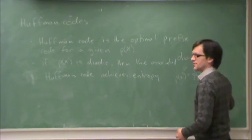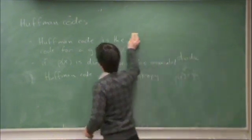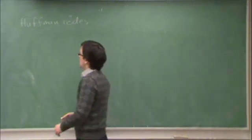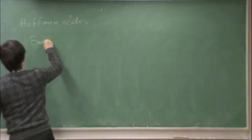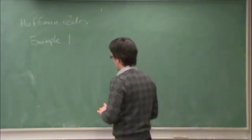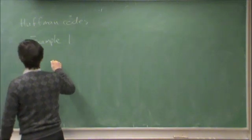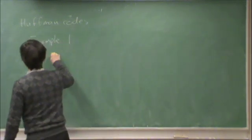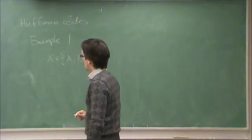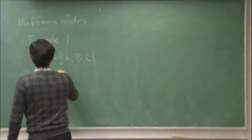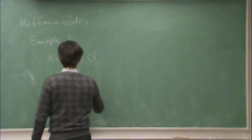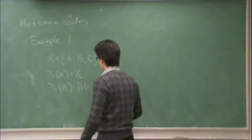The procedure is actually quite simple, and the best way to illustrate it is by example. Example one. Let's say the random variable X takes values in A, B, C. The probability of A is one-half, and probability of B equals probability of C equals one-quarter. This is a dyadic distribution.